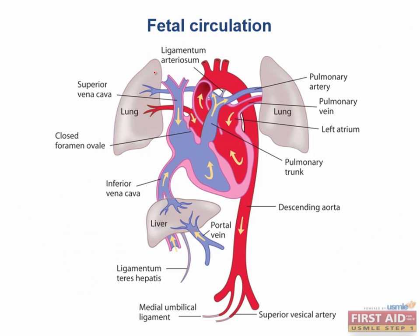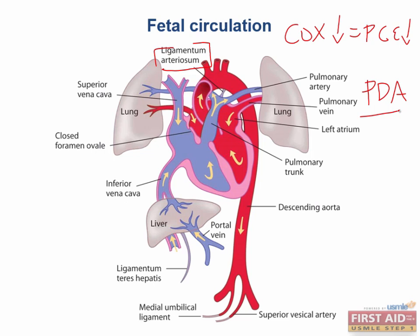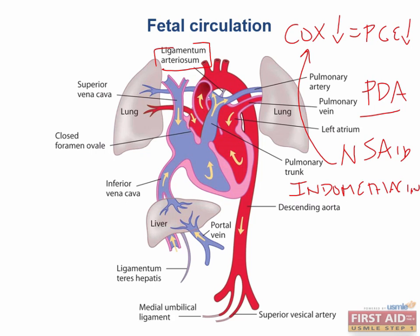If the ductus does not close, we need a drug that will inhibit the production of PGE1 and PGE2 — a drug that inhibits cyclooxygenase so we have fewer prostaglandins circulating. To close a patent ductus arteriosus, we give indomethacin. This is the NSAID used for the closure of a patent ductus arteriosus, and your step one exam may ask for either the mechanism of action or this specific drug.